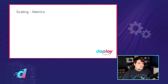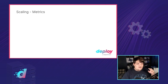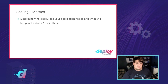So how do we determine when we need to scale? Metrics. You can say you want to scale all you want, but unless you have actual metrics — logs, usage, CPU, all those things — it's going to be very difficult to scale with any more accuracy than just guessing. You need to be able to determine what resources your application needs and what happens if you don't have them.